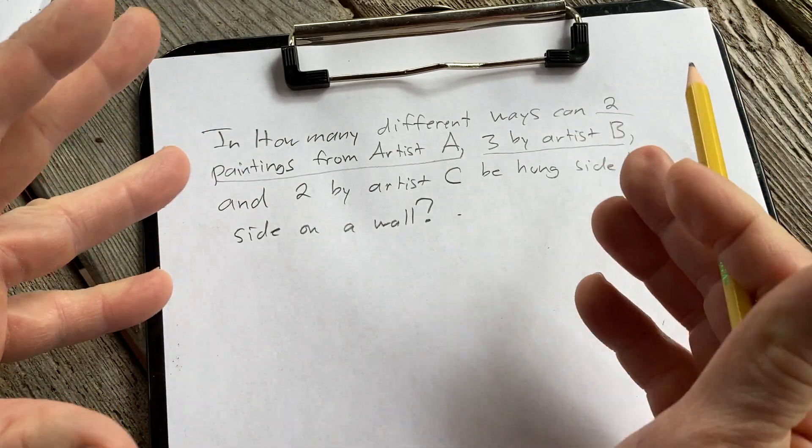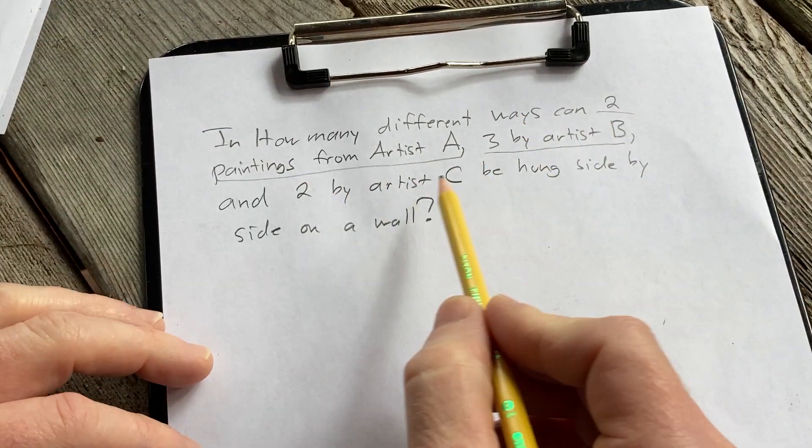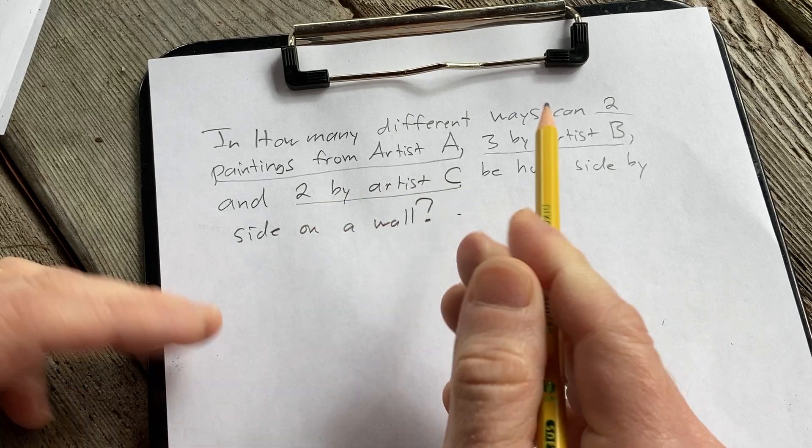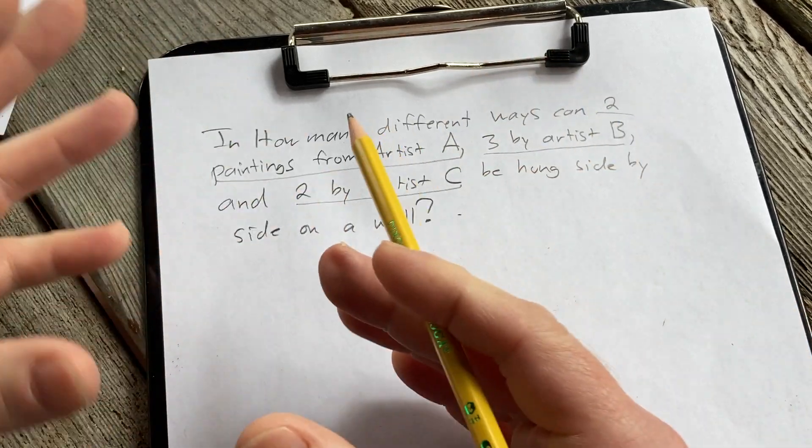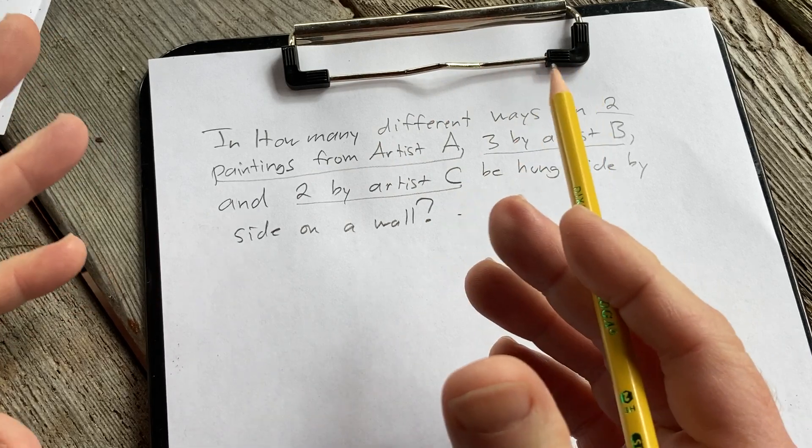The only thing we care about is that they're from artist B. And likewise the two paintings by artist C are also the same painting. We're not really distinguishing whether or not they're different paintings.